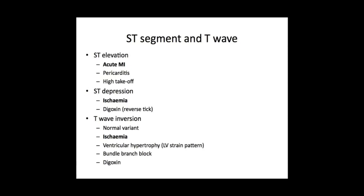Regarding ST depression, the most important diagnosis is cardiac ischemia. You can often find areas of ischemia in the resting ECG in people who have chronic angina, or you can induce ST depression in exercise — this is the principle of the exercise tolerance test to see if someone has myocardial ischemia. Another cause of ST depression is the patient taking digoxin, which classically results in what's called the reverse tick morphology — it looks like a reverse tick sign on the ECG.